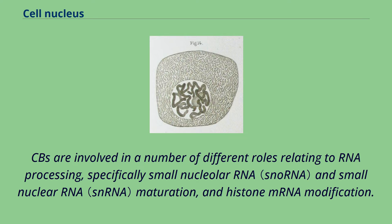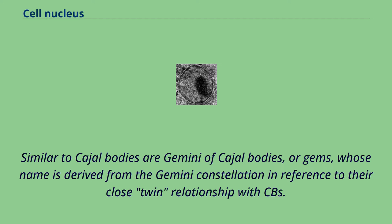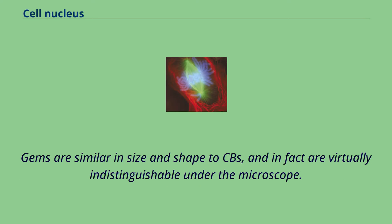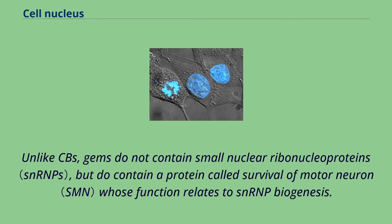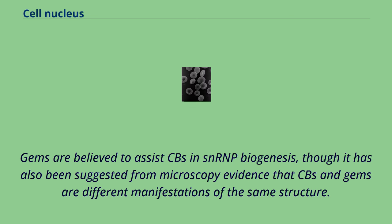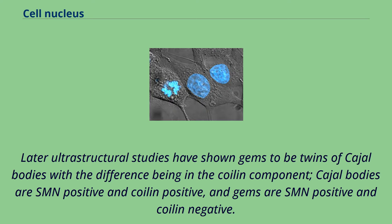Similar to Cajal bodies are Gemini of Cajal bodies, or GEMs, whose name is derived from the Gemini constellation in reference to their close twin relationship with CBs. GEMs are similar in size and shape to CBs and in fact are virtually indistinguishable under the microscope. Unlike CBs, GEMs do not contain small nuclear ribonucleoproteins, but do contain a protein called survival of motor neuron whose function relates to snRNP biogenesis. GEMs are believed to assist CBs in snRNP biogenesis. Later ultrastructural studies have shown GEMs to be twins of Cajal bodies, with Cajal bodies being SMN positive and coilin positive, and GEMs being SMN positive and coilin negative.